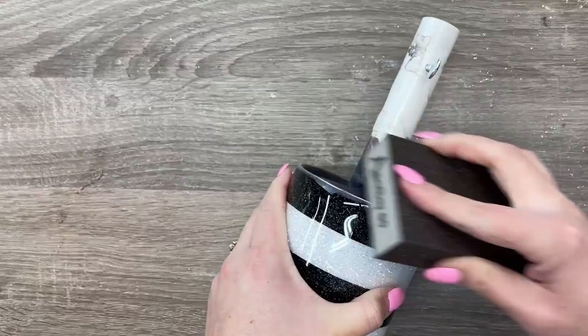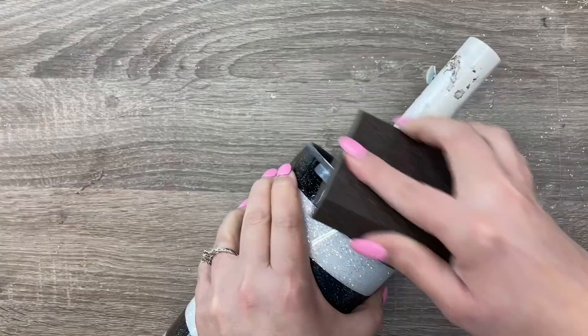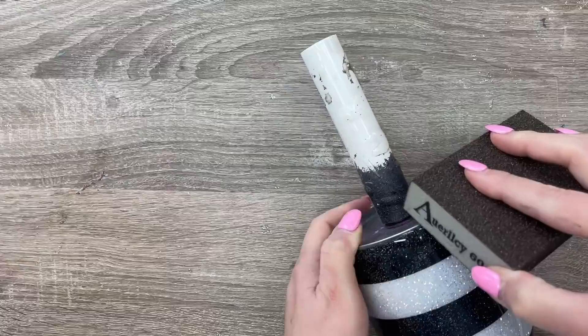I'm going to do my regular sanding up around that top rim like I normally would. I've got a 60 grit sanding block here. We just want to expose that thin line of stainless steel up at the top.